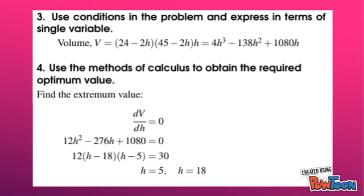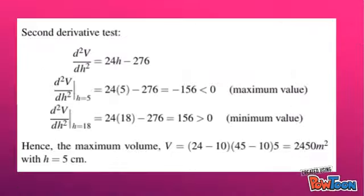To find the extremum value, we set dV/dh equals 0. Then we obtain two values for h which are 5 and 18. To check which value will bring the maximum volume, we apply the second derivative test.